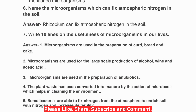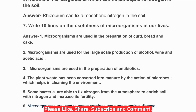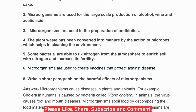Question seven: write ten lines on the usefulness of microorganisms in our lives. Six points are given here. First, microorganisms are used in the preparation of curd, bread, and cake. Second, they are used for large-scale production of alcohol, wine, and acetic acid. Third, microorganisms are used in the preparation of antibiotics. Fourth, plant waste converted into manure by the action of microbes helps in cleaning the environment. Fifth, some bacteria fix nitrogen from the atmosphere to enrich soil and increase its fertility. Sixth, microorganisms are used to create vaccines that help protect against disease.